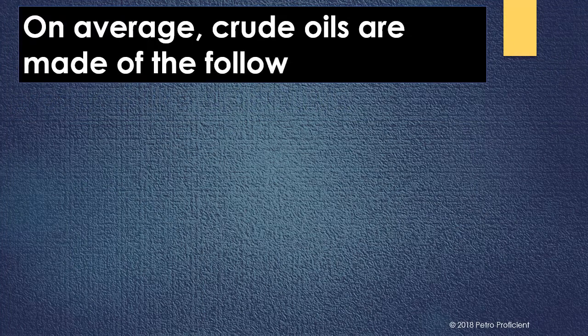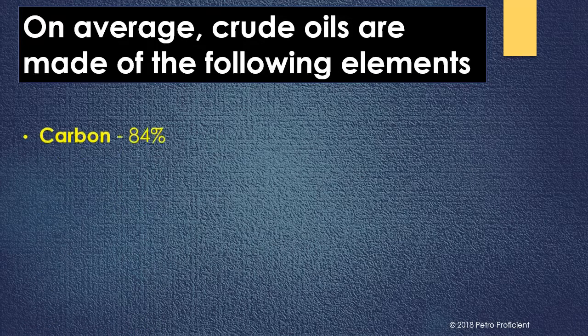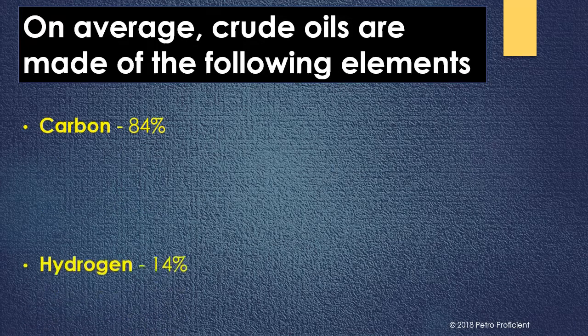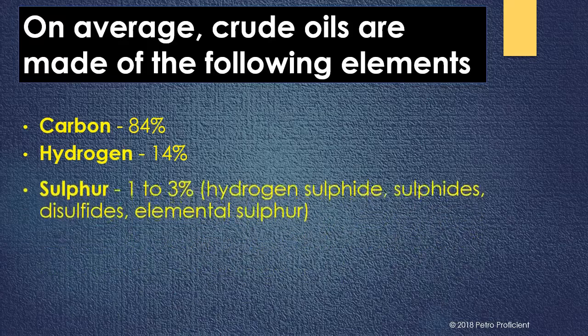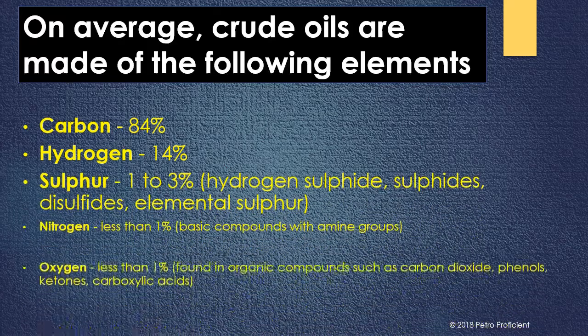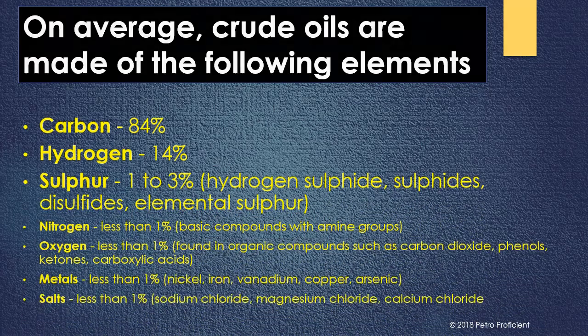On average, crude oils are made of the following elements: carbon 84 percent, hydrogen 14 percent, and sulfur one to three percent.